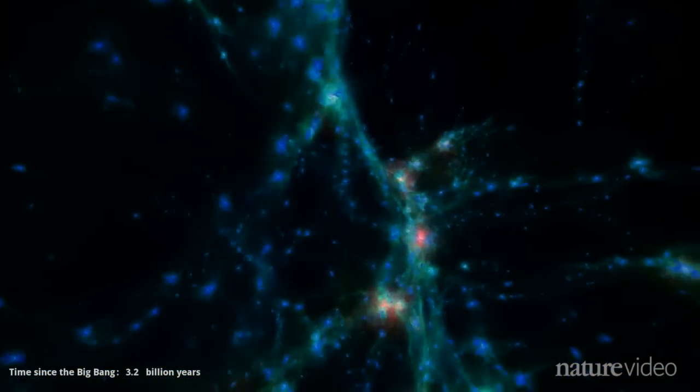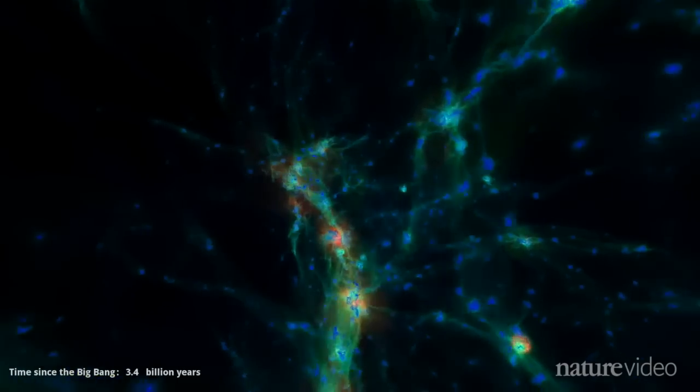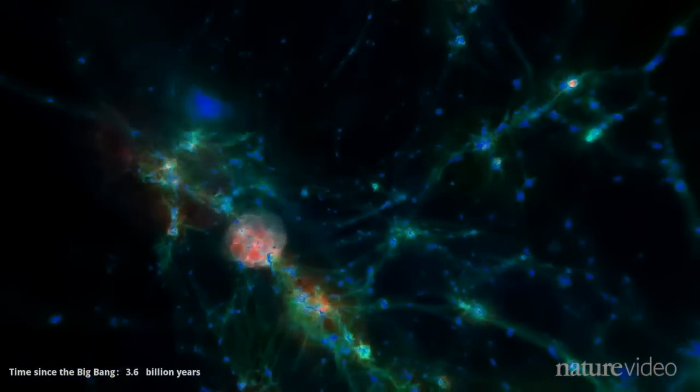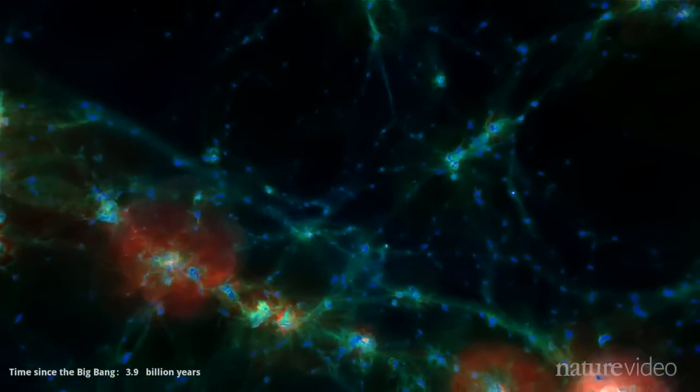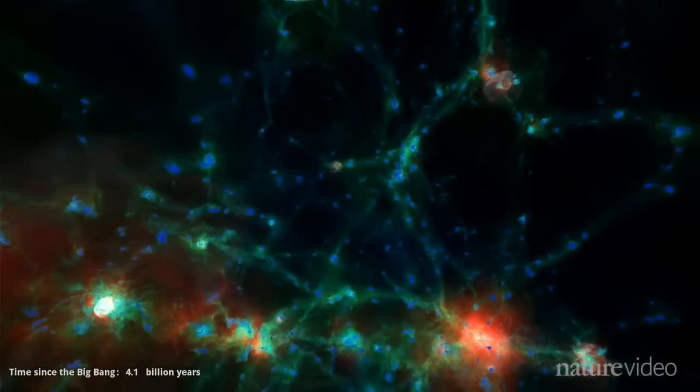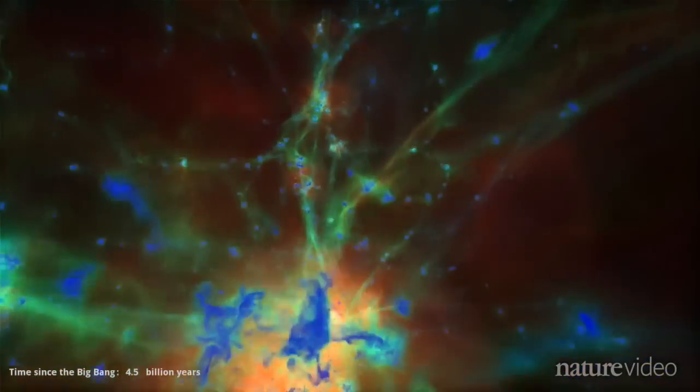Now we're looking at the ordinary matter. Blue shows relatively cold clouds of gas, where stars form. Green is warmer gas, while red and white show hot regions around the most violent galaxies.